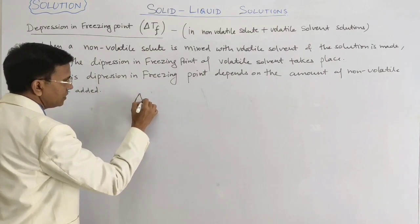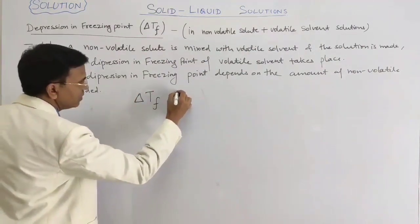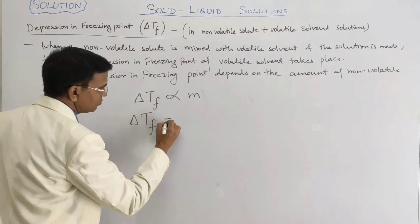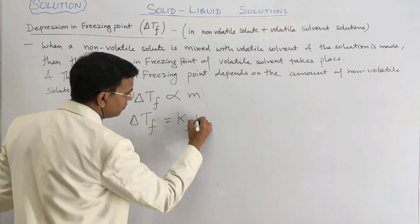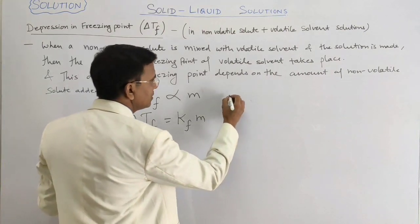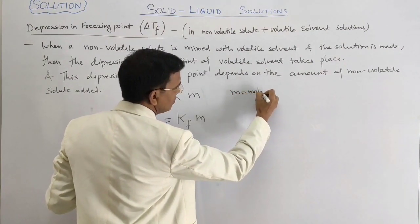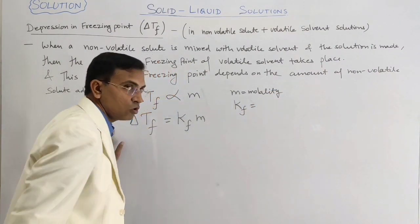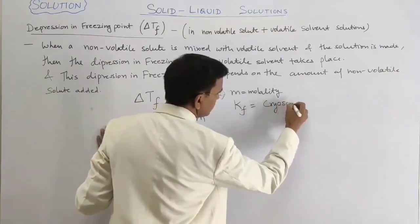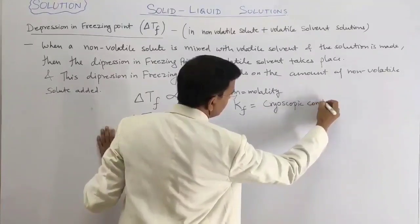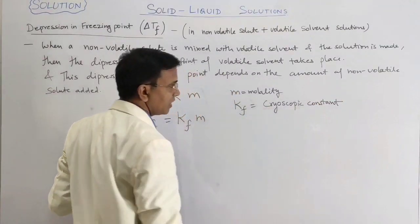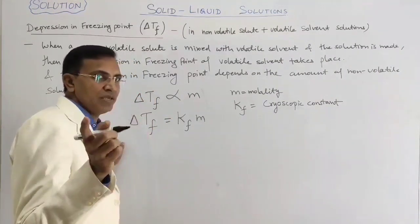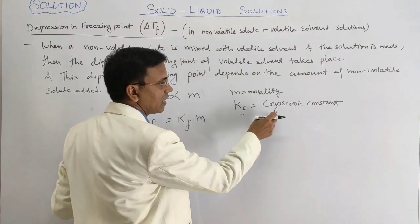Delta Tf is proportional to molality, and delta Tf is equal to Kf times M, where Kf is the cryoscopic constant. These names are very important — in the case of elevation in boiling point there is Kb, the ebullioscopic constant.